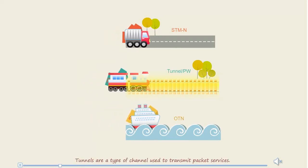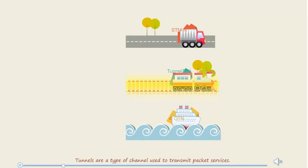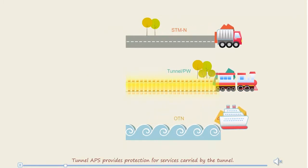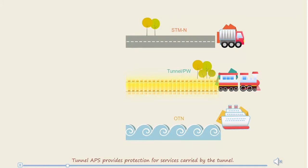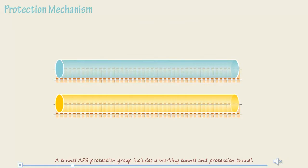Tunnels are a type of channel used to transmit packet services. Tunnel APS provides protection for services carried by the tunnel. A tunnel APS protection group includes a working tunnel and protection tunnel.